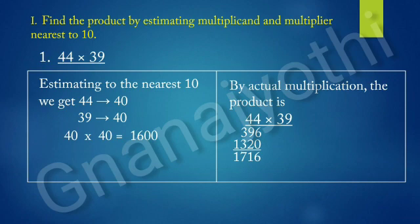Now, find the product by estimating Multiplicand and Multiplier nearest to 10: 44 into 39. First, estimating to the nearest 10. If we estimate to the nearest 10, we will get 44 is estimated to 40, 39 is estimated to 40. So, 40 into 40 is 1,600.